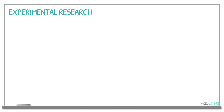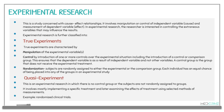We can classify quantitative research into either experimental or non-experimental research. Experimental research is concerned with the cause-effect relationship. It involves manipulation or control of independent variables — for example, the cause of a disease — and measurement of dependent variables, that is the effect. The researcher is interested in controlling extraneous variables that may influence the results.